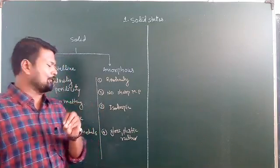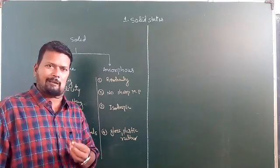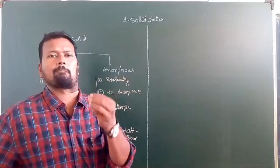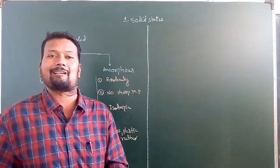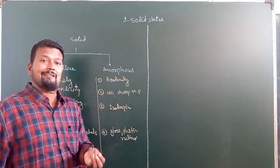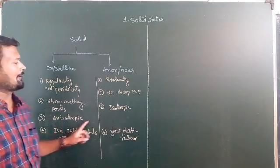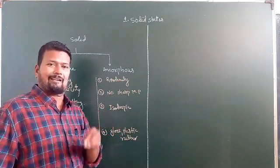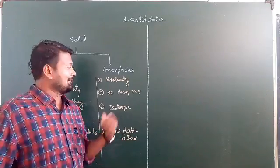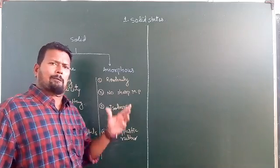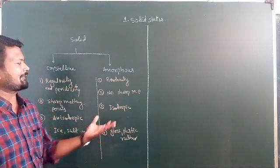The next property: crystalline solids are anisotropic. This means physical properties such as refractive index and electrical conductivity change with direction of measurement. Amorphous solids, on the other hand, cannot change their physical properties according to direction — the properties remain the same.